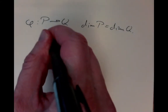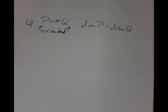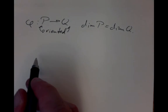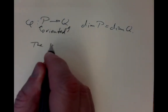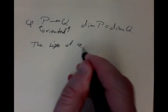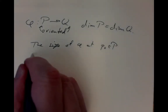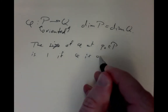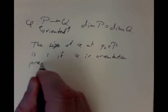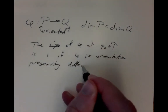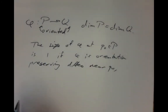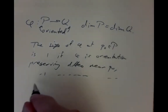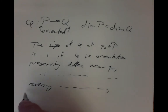We'll assume that both P and Q are oriented manifolds — in other words, we have charts chosen on them so that the transition maps are orientation-preserving, meaning they have positive determinant of the derivative. The sign of phi at a point p₀ is +1 if phi is an orientation-preserving local diffeomorphism near p₀, −1 if it is orientation-reversing, and 0 otherwise.